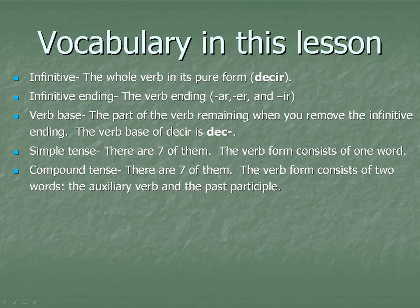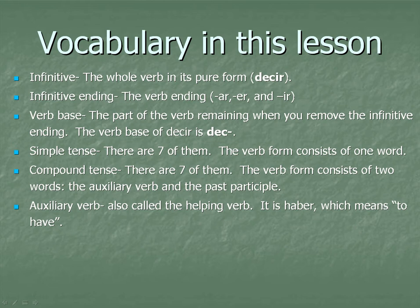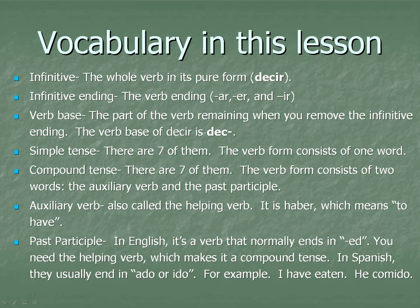Auxiliary verb — also called the helping verb. It is haber, which means to have. You're going to see this a lot in this lesson. Past participle — in English, it's a verb that normally ends in -ed. You need the helping verb, which makes it a compound tense. In Spanish, they usually end in -ado or -ido. For example, comido: I have eaten — he comido. He, which means I have, and comido, derived from the verb comer, means to eat.